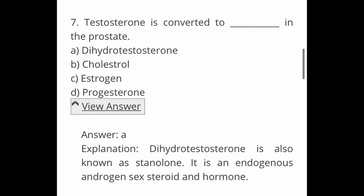Next question: testosterone is converted to dash in the prostate. Options are A. Dihydrotestosterone, B. Cholesterol, C. Estrogen, and D. Progesterone. The answer is A, dihydrotestosterone. Testosterone is converted into dihydrotestosterone in the prostate. Dihydrotestosterone is also known as stenolone. It is an endogenous androgen sex steroid and hormone.